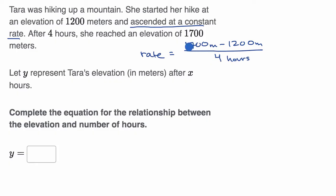So her constant rate in the numerator here, 1,700 minus 1,200 is 500 meters. She's able to go up 500 meters in four hours. If we divide 500 by four, this is 125 meters per hour.